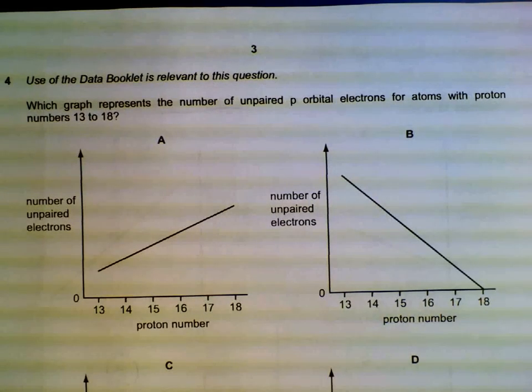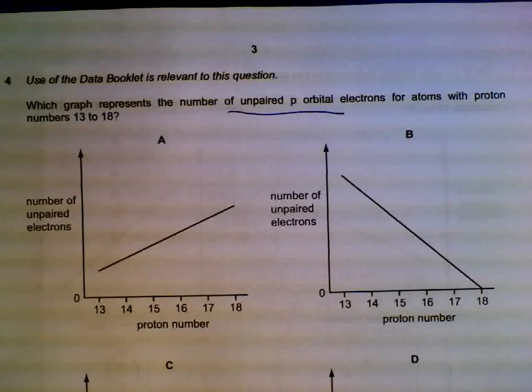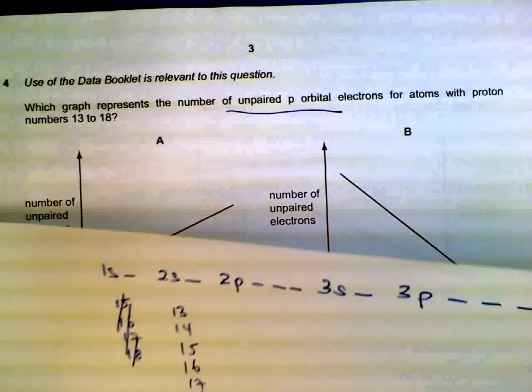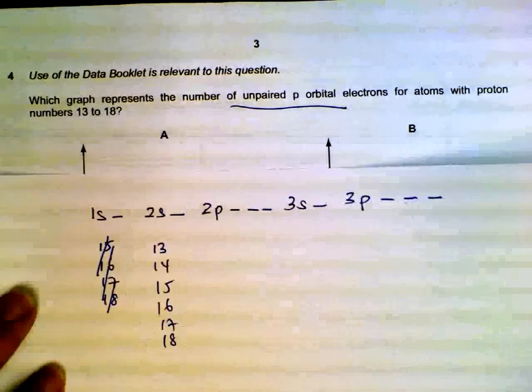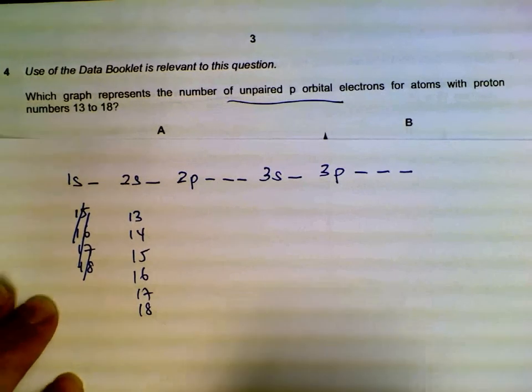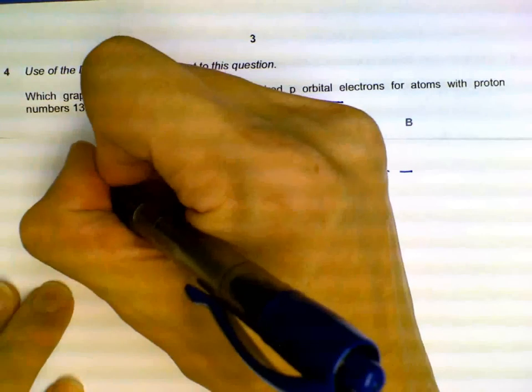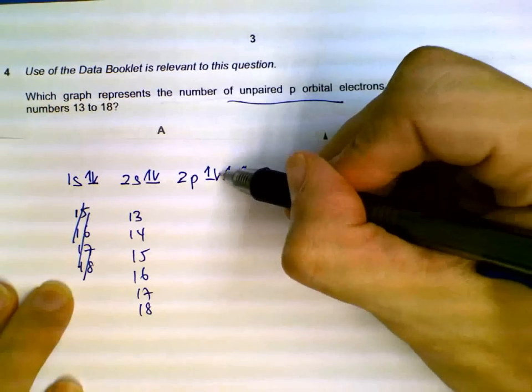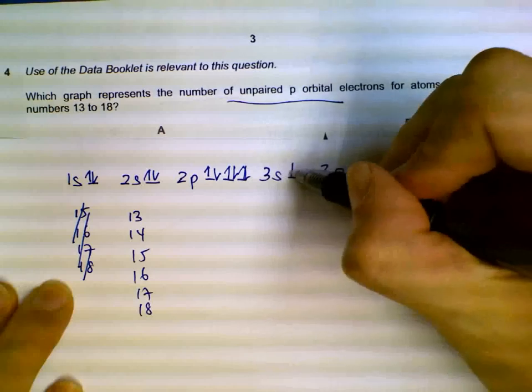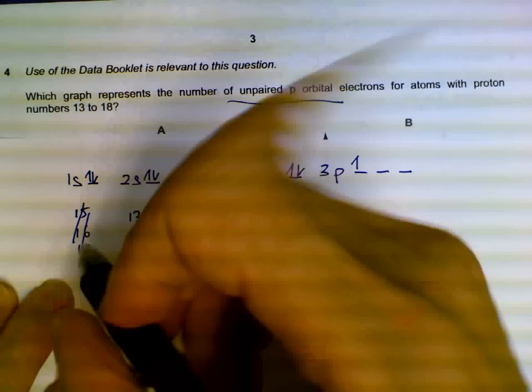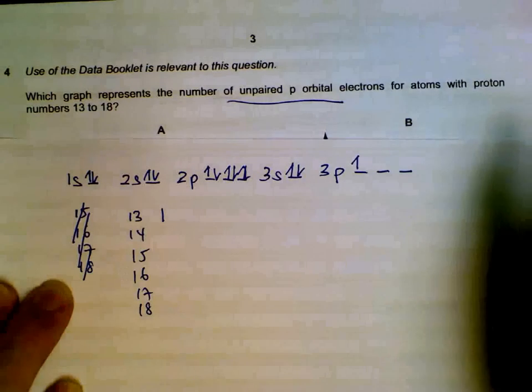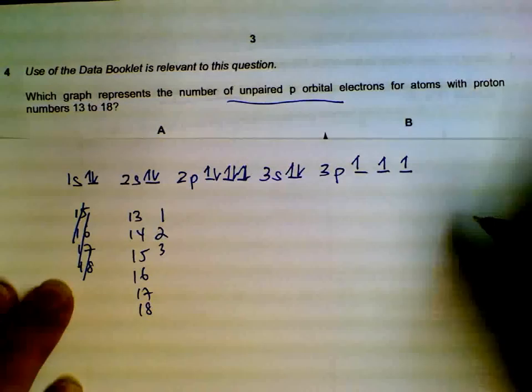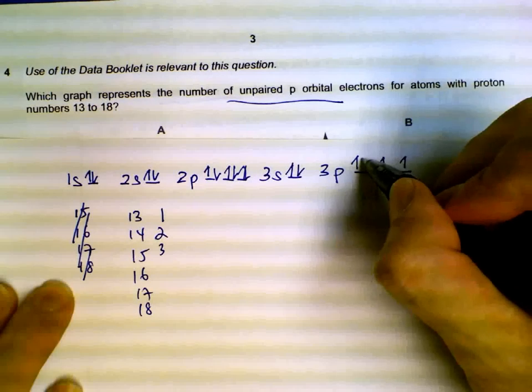Number four, finding out the number of unpaired p orbitals starting from 13. I'll show the configuration here. Let's say we have 13 electrons. A quick filling up: one, two, three, four, five single first, six, seven, eight, nine, ten, eleven, twelve, thirteen. So we will have one unpaired p orbital. 14 - two unpaired. 15 - three unpaired.